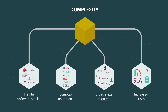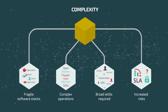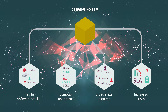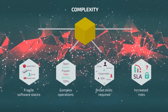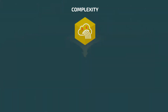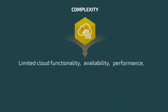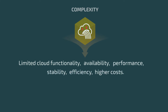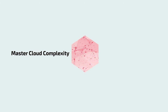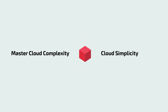Many components with numerous dependencies make open clouds hard to build, operate, and update. The result? Limited cloud functionality, availability, performance, stability, and efficiency — and higher costs. So, how do you master cloud complexity and get to cloud simplicity?